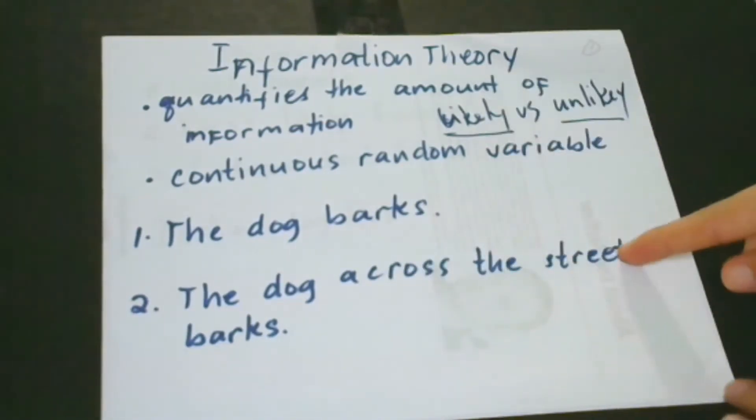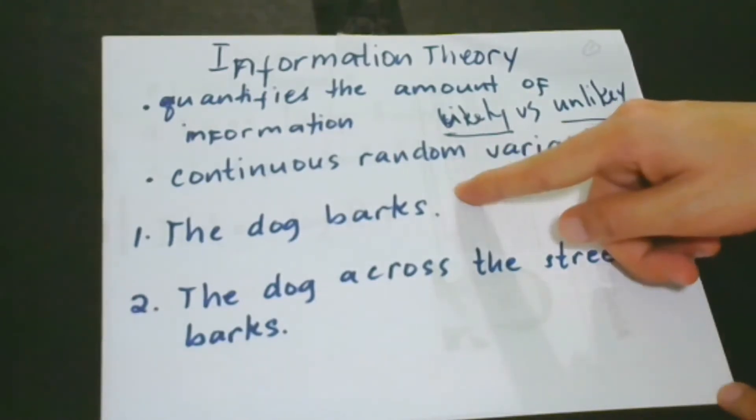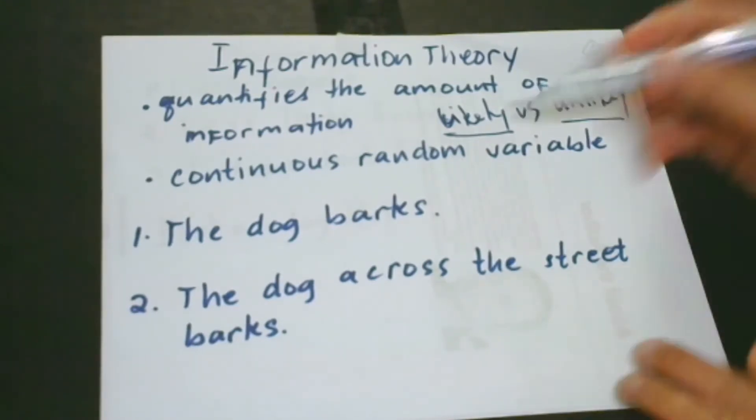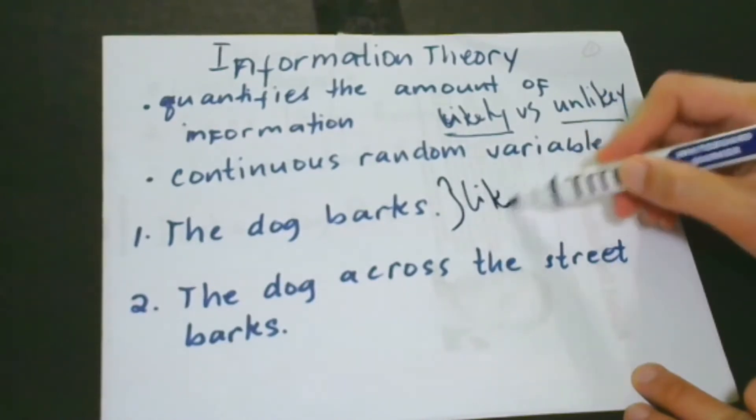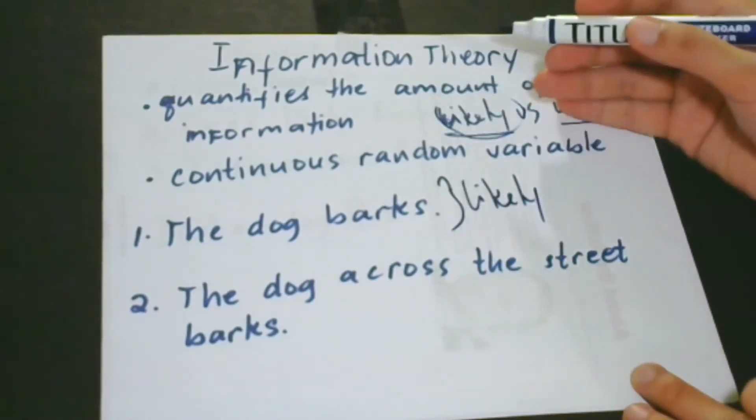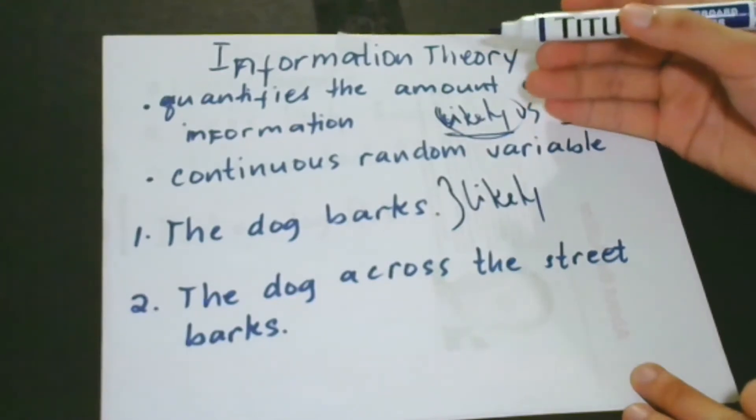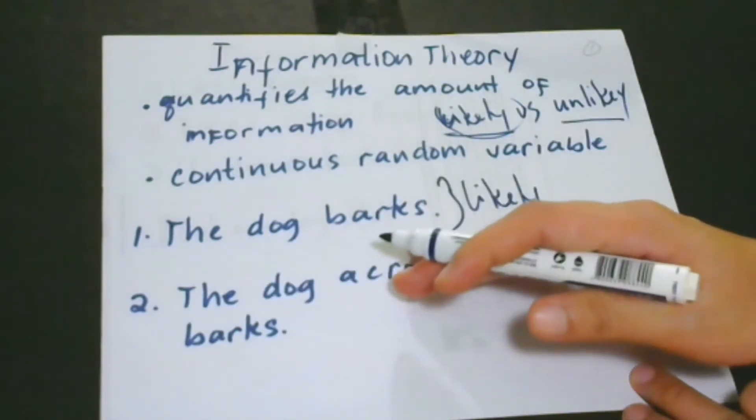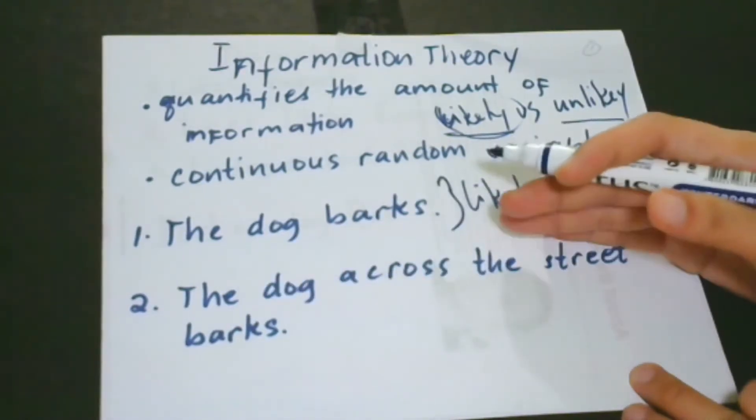In this case, although number two has more words than number one, still number two is the sentence that contains more information. So in short, this sentence is very informative than this statement. So why is this so? Everybody knows and expects that naturally, all dog barks or all dogs bark. So this is likely. We said before, likely statement or likely events have less information.